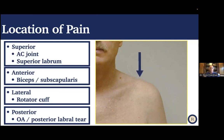The location of pain is very important. Pain on top of the shoulder is often the AC joint or the labrum on top. Pain in the front can be the biceps tendon or the subscapularis. Pain on the lateral side of the shoulder is most commonly the rotator cuff — people kind of cup the side of their shoulder and it comes down the arm. Pain in the back of the shoulder is often from arthritis or a labral tear in the back.